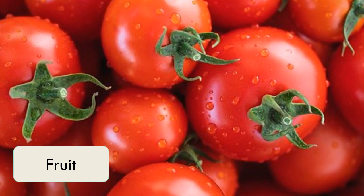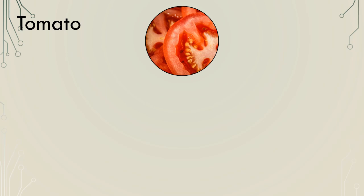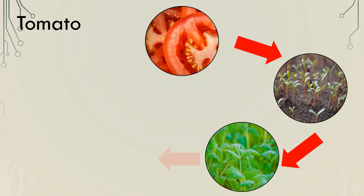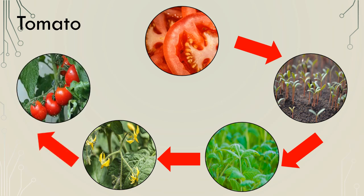Many plants produce fruits which have seeds. Let's take a look at the life cycle of a tomato plant. The life cycle of a tomato plant begins with the seed found inside the fruit. Planted in the right conditions, these will germinate and grow into small seedlings. The plant will continue to grow into an adult when it will produce small yellow flowers. Once pollinated, the plant will then be able to produce more tomatoes with the seeds inside, ready for the life cycle to begin again.